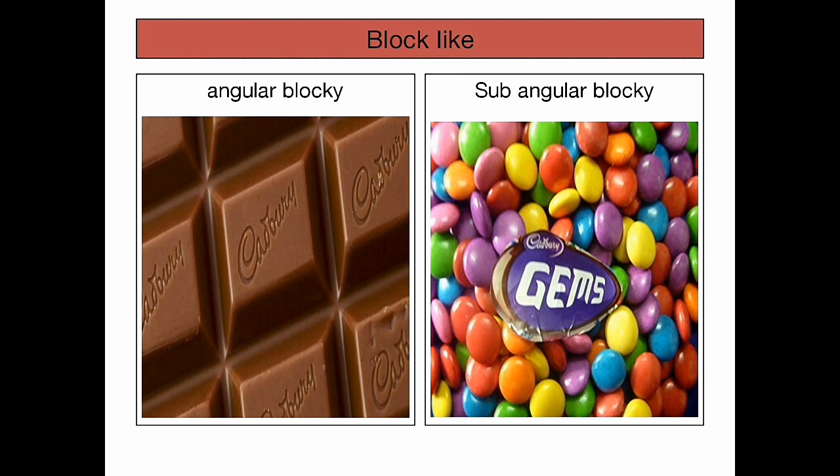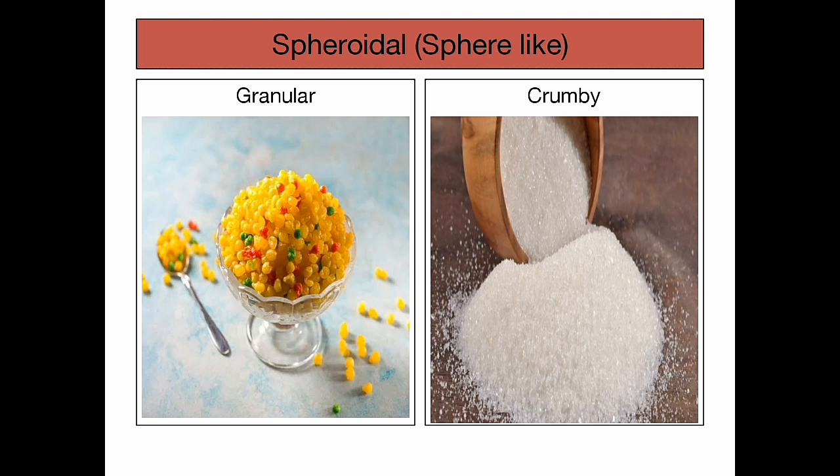The third most important type is block-like structure. Here, all three dimensions are about the same size. If the faces are flat, distinct, and the edges are sharp — like a Cadbury Dairy Milk — it is angular blocky. When the faces and the edges are rounded — like Gems chocolate — it is subangular blocky.